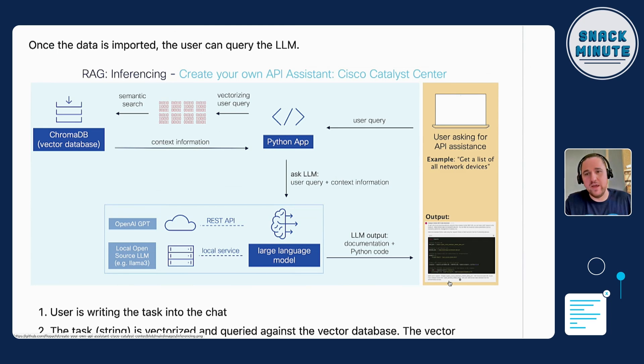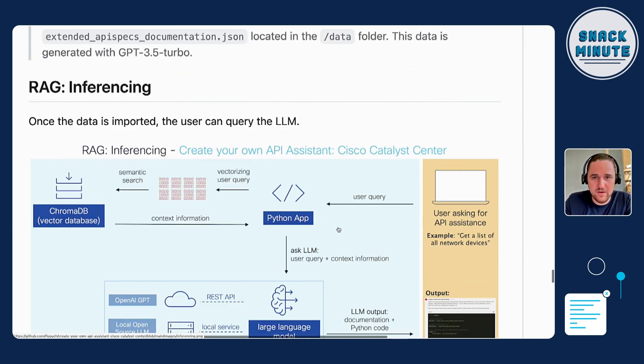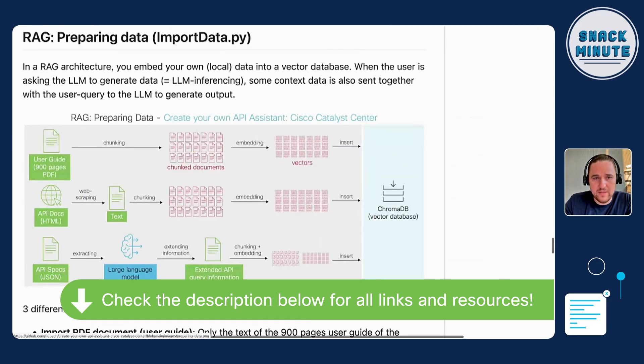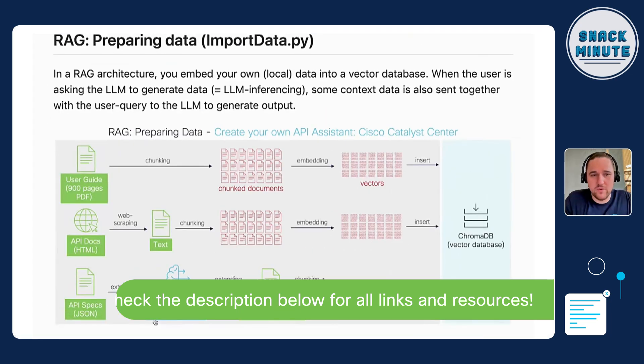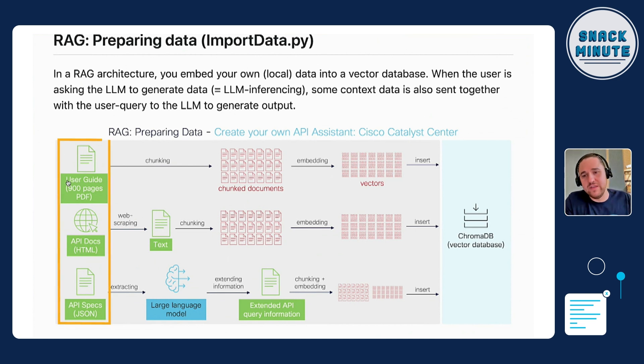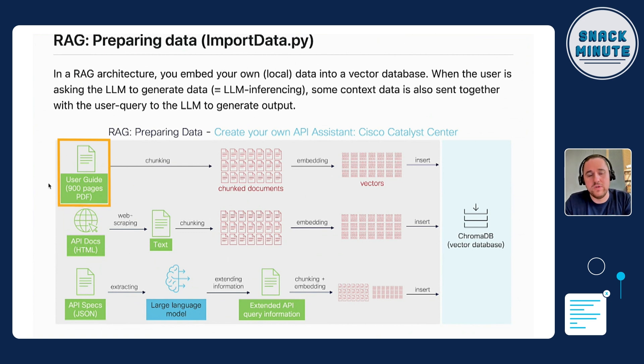So you had to populate ChromaDB with the latest API documentation for Catalyst Center, correct? Exactly. The process is shown here — this is the inferencing part. You need to put data into the ChromaDB first. In this example I put three data sources into the vector database. On one side there is the user guide, which is a 900-page PDF file.